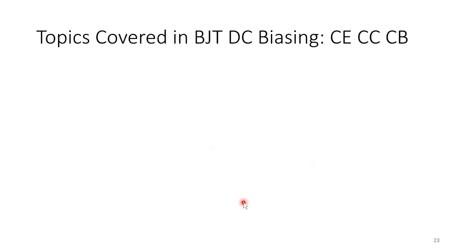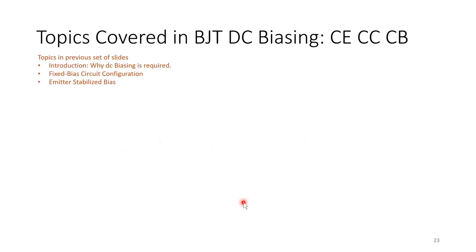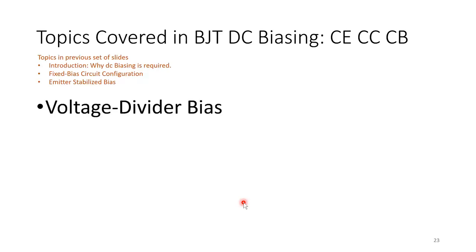Topics covered in BJT DC biasing as a whole: we've done the introduction, why DC biasing is required, fixed bias, and emitter-stabilized bias. We are now at voltage divider bias. After this lecture, we'll be covering collector feedback, emitter follower, and the common base.